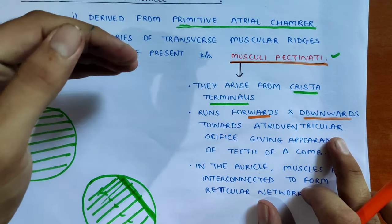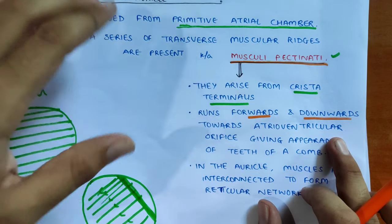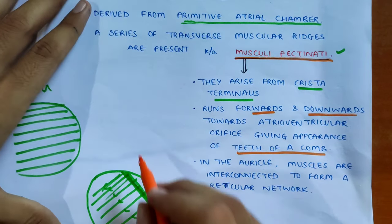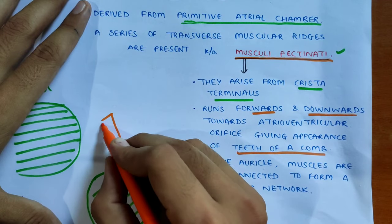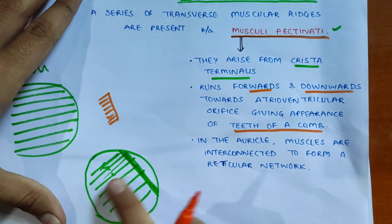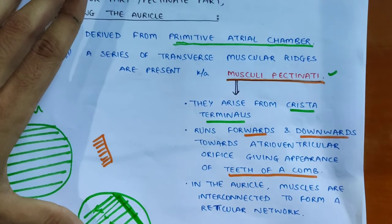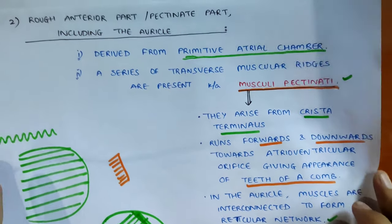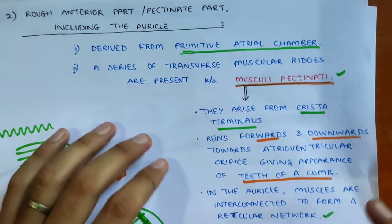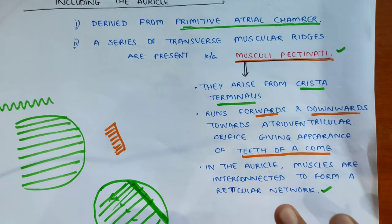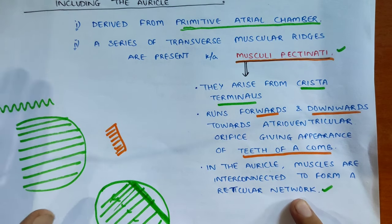The musculi pectinati run towards the right atrium and right ventricle orifice, giving the appearance of the teeth of a comb. In the auricle, the muscles are interconnected to form a reticular network.